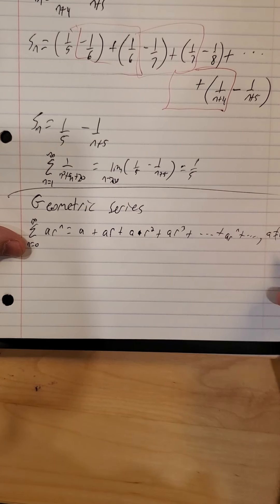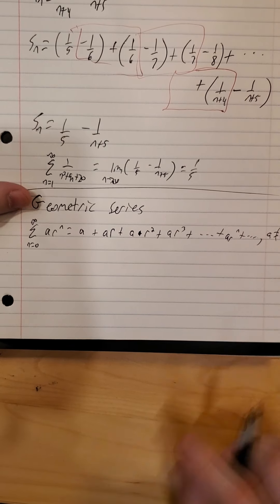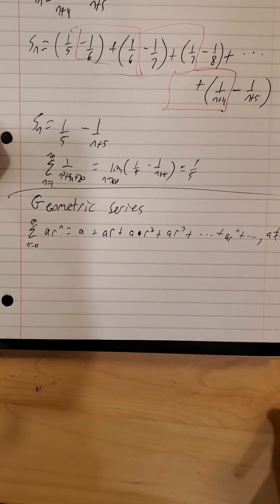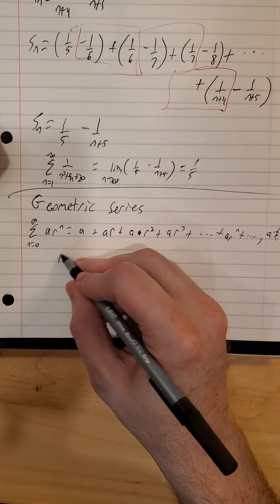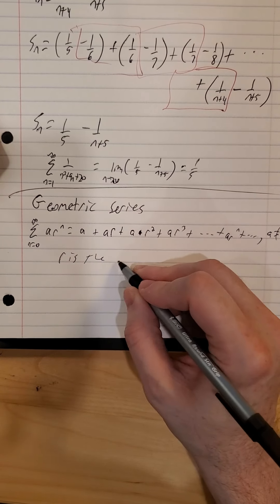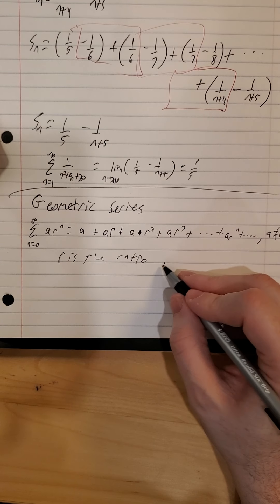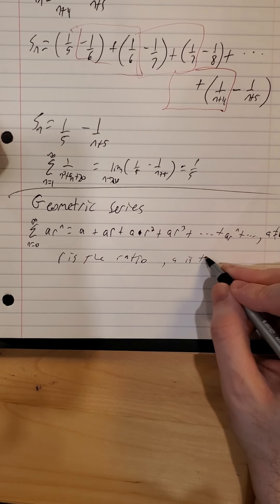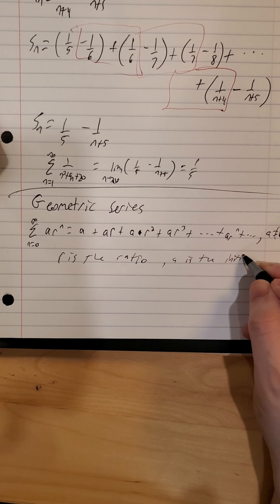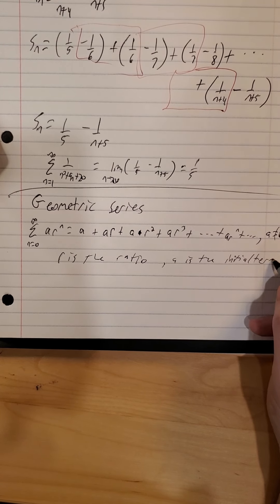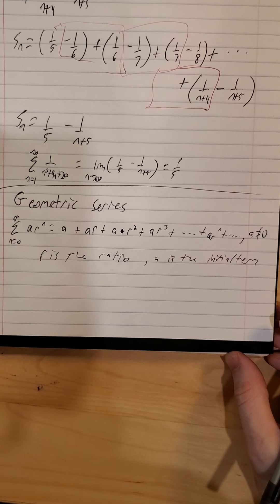Here a is assumed to be non-zero, otherwise we have a very boring series of a bunch of zeros. So r is the common ratio and a is the initial term — what we started with.